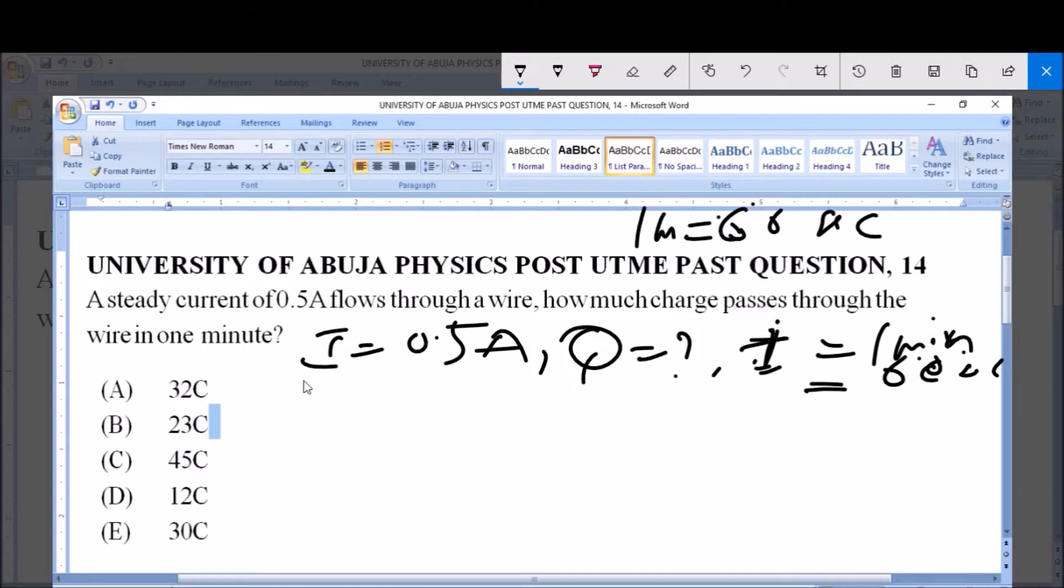Now these are the parameters we have: we have our current, we have our quantity of charge, and we have our time. You ask yourself which formula connects these three together, and the formula is Q equals IT. Quantity of charge equals the current multiplied by the time.